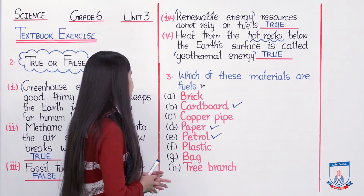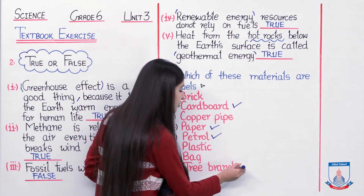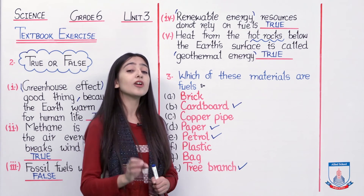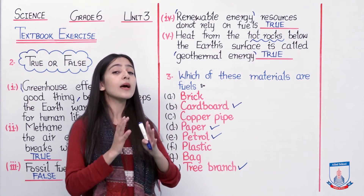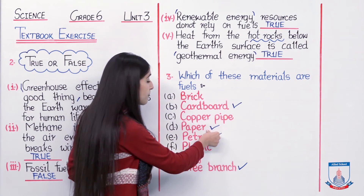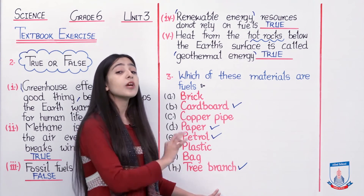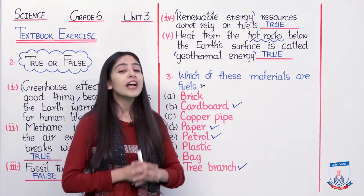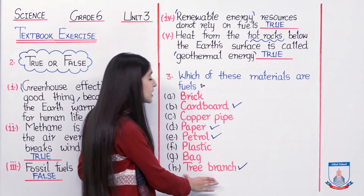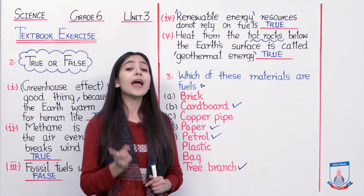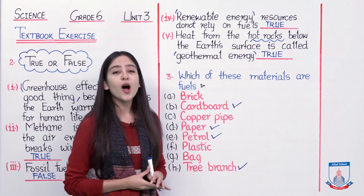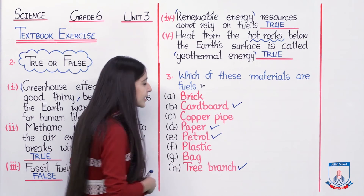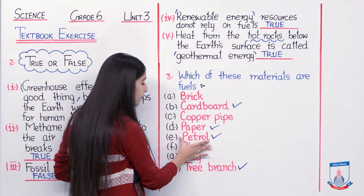The last material is a tree branch. A tree branch is again a plant source — organic material. Whether we make cardboard, paper, or simply use a branch directly, when we burn it we get heat energy. So a tree branch can be utilized as fuel. From the list, the materials that can be used as fuel are: cardboard, paper, petrol, and tree branches.